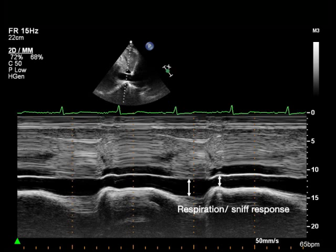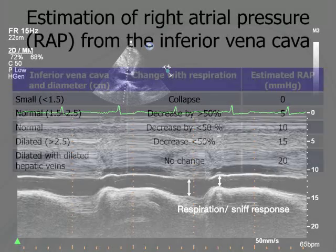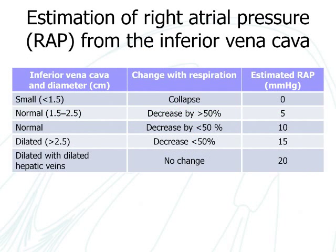Failure to collapse with respiration and sniff, and/or dilatation of the inferior vena cava and hepatic veins, is associated with higher right atrial pressure. Right atrial pressure can therefore be estimated based on the size of the vena cava and the change in respiration, as shown here.